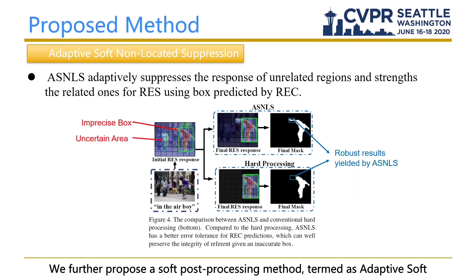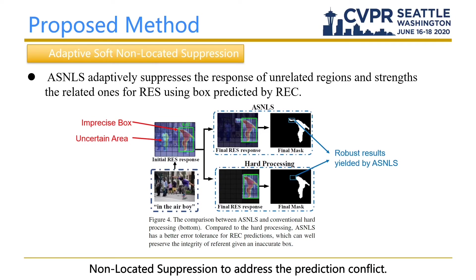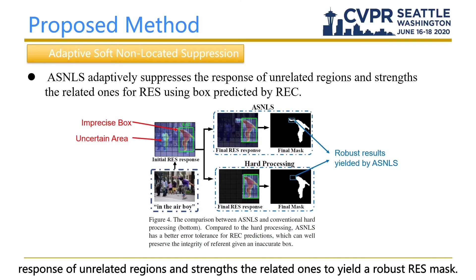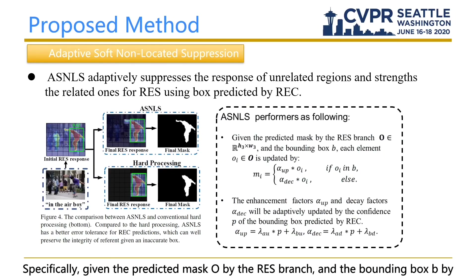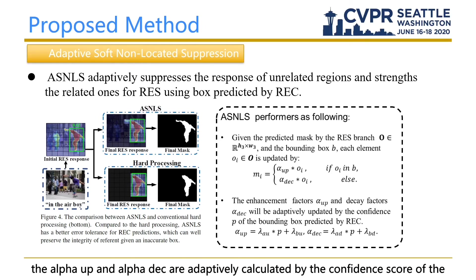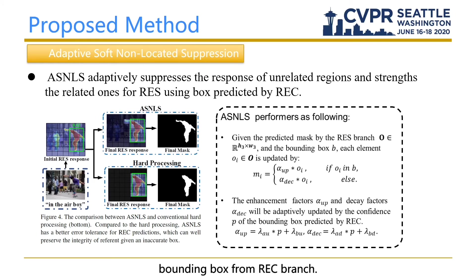We further propose a soft post-processing method termed Adaptive Soft Non-Located Suppression (ASNLS) to address the prediction conflict. Based on the predicted bounding box from REC, ASNLS adaptively suppresses the response of unrelated regions and strengthens the related ones to produce a robust RIS mask. Specifically, given the predicted mask O from the RIS branch and bounding box B from the REC branch, each element in O is updated by enhancement factors alpha-up and decay factors alpha-decay, which are adaptively calculated by the confidence score of the bounding box from the REC branch.